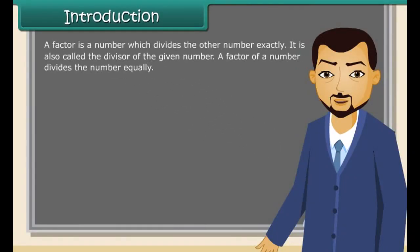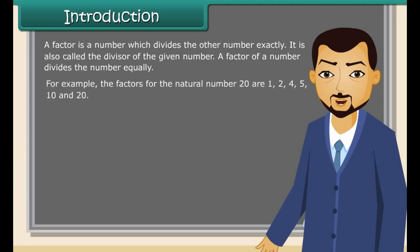A factor is a number which divides the other number exactly; it is also called the divisor of the given number. A factor of a number divides the number equally. For example, the factors of the natural number 20 are 1, 2, 4, 5, 10, and 20. The factors of prime numbers are 1 and the number itself.